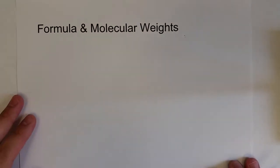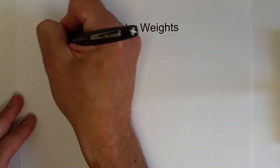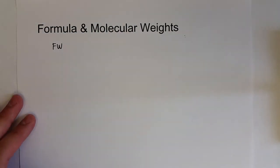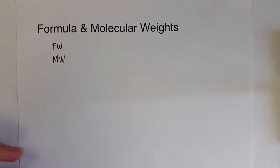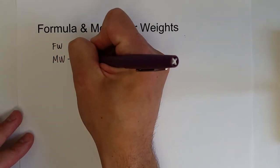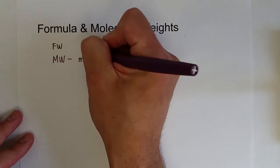Next, what we're going to do is talk about formula and molecular weights. So a formula weight and a molecular weight are the same thing, but just referring to different types of compounds. Molecular weights refer to the atomic mass of molecules.